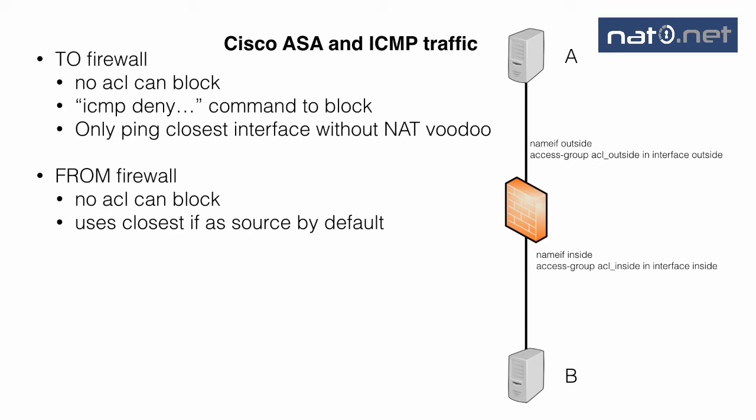By default the firewall uses the closest interface as the source. That means that if you ping host A from the firewall, it will use the outside interface as the source address. You can change that default behavior by specifying the source on the command line for the ping command in the firewall.